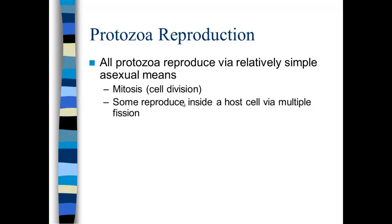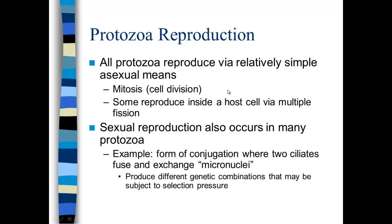In terms of reproduction, these protozoa will reproduce very simply by cell division — just mitosis. There are some host cells that will replicate via multiple fission. However, there's also sexual reproduction that occurs in many protozoa — a form of conjugation where two ciliates, like paramecium, will fuse and exchange micronuclei. This allows for genetic diversity, which can contribute to survival during selection pressure.